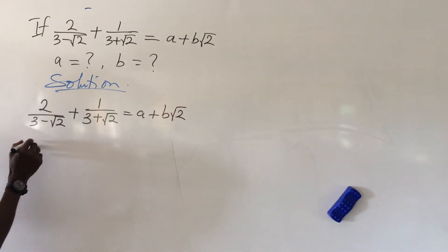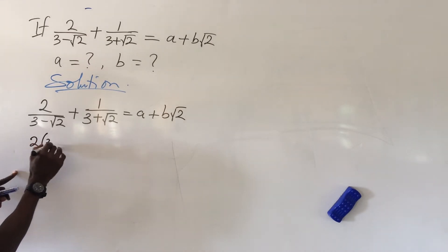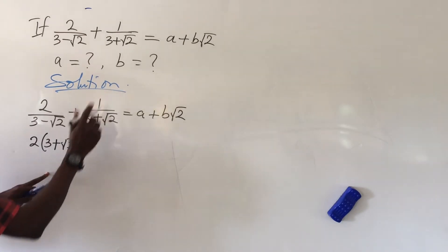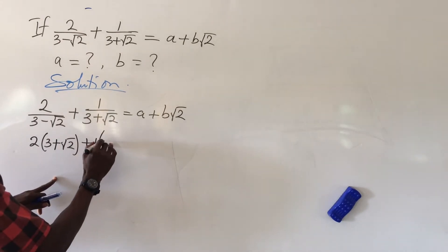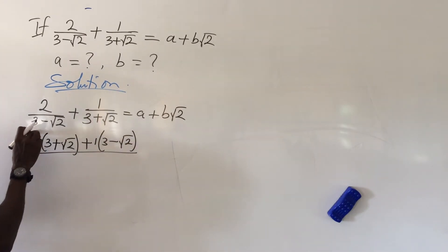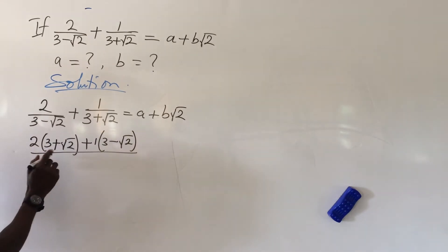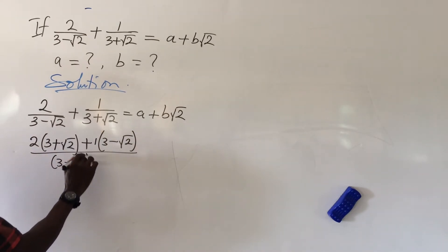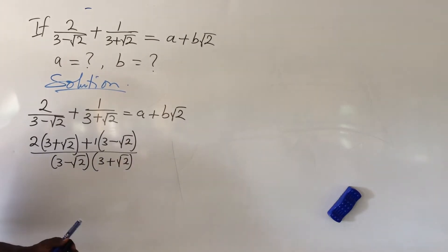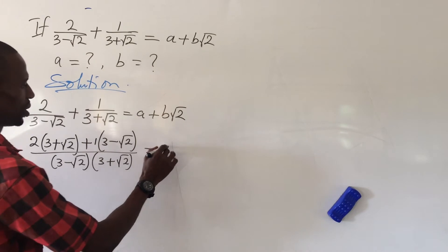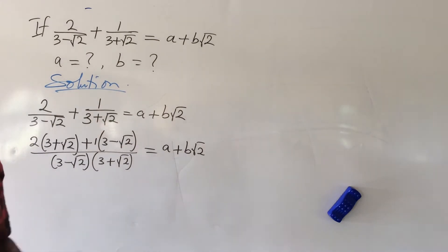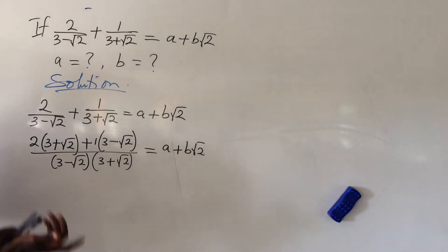If we do that, this will give us 2 bracket (3 plus root 2) plus 1 bracket (3 minus root 2), all over the LCM of the two denominators, which is (3 minus root 2)(3 plus root 2), equal to a plus b root 2.